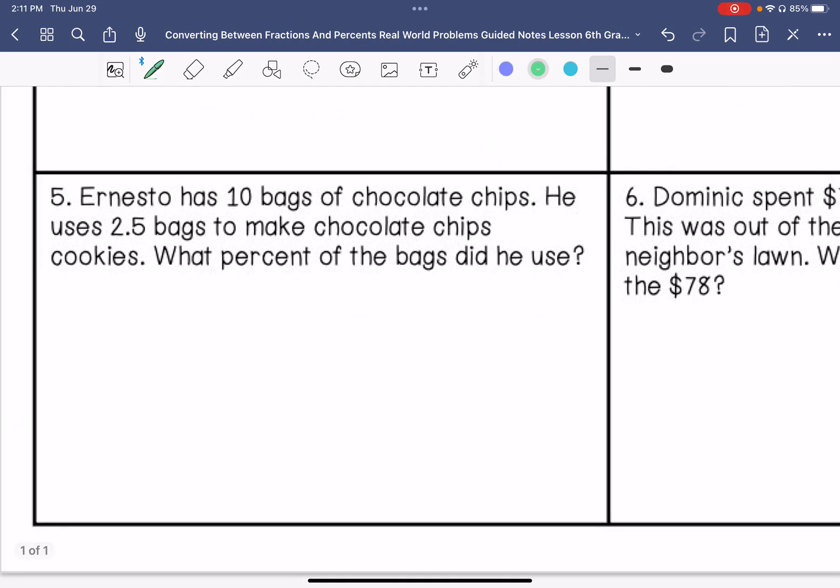Number five. Ernesto has 10 bags of chocolate chips. He uses 2.5 bags to make chocolate chip cookies. What percent of the bags did he use? So he used 2.5 out of 10. We want to get this to 100, so we're going to multiply it by 10. So that would be 25 out of 100, which is equivalent to 25 percent.